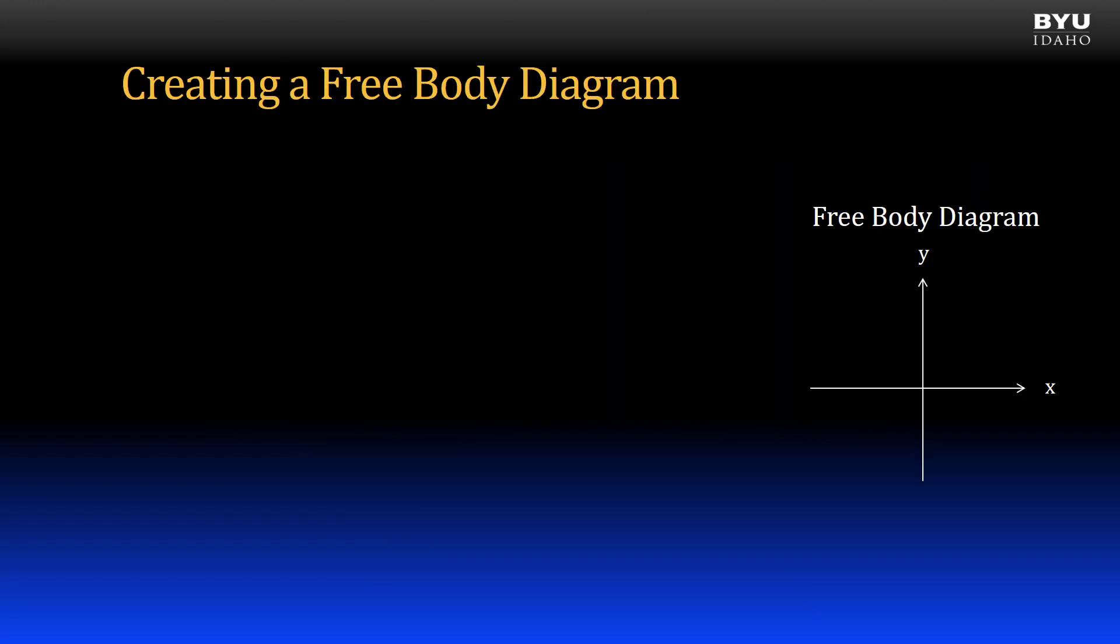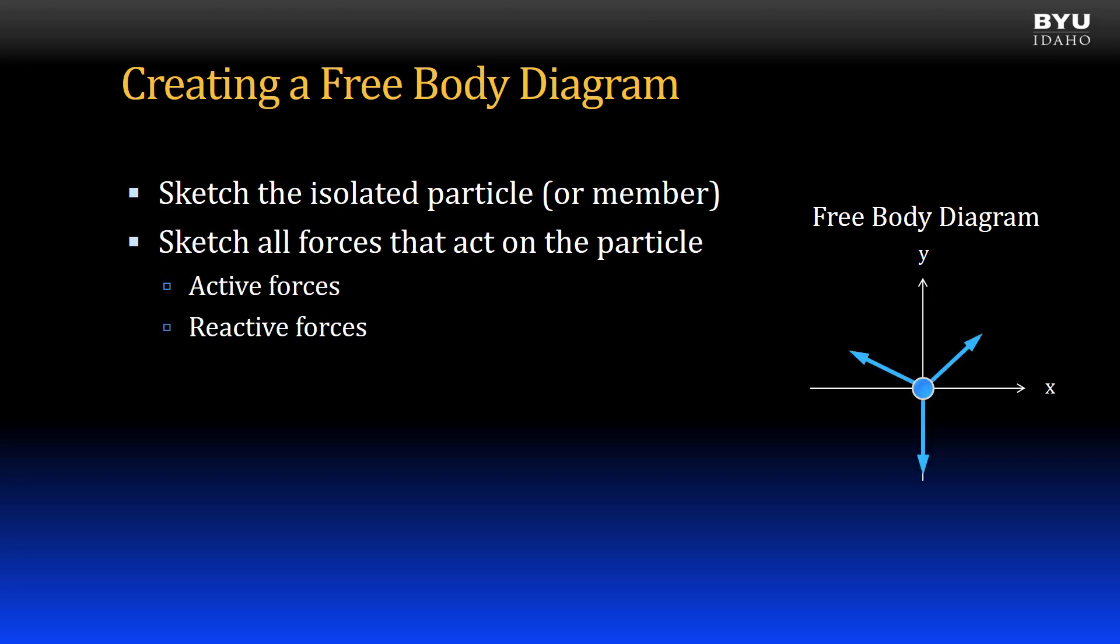When creating a free body diagram, the first thing we do is identify the object on which we are analyzing forces and draw it as an isolated particle or member. By isolating it, I mean that you draw a complete mental circle around it and consider every force or cable or spring or whatever intersects that circle and acts on the particle. After drawing the point, we draw lines or arrows to represent all the forces that act on that particle.